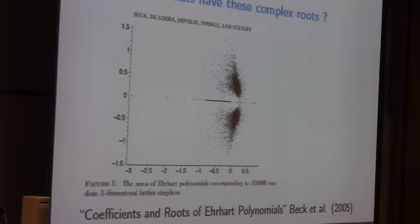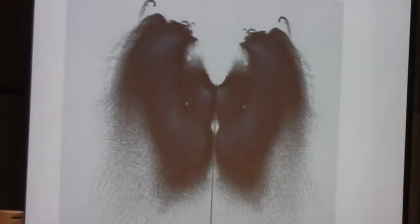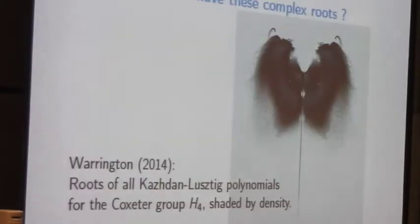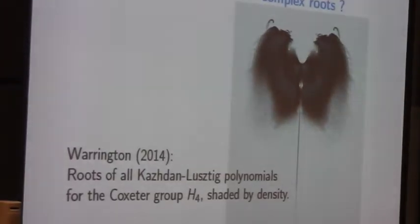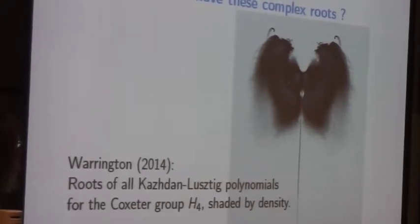And when I saw this one, it reminded me of another picture that I've seen similarly. So what polynomials have these complex roots? This came up as a piece of art in the joint meetings at the AMS recently. So this is done by Greg Warren. And these are all the roots of all the Kazhdan-Lusztig polynomials for the Coxeter group H4. And then the shading, the coloring there, is by density. Kind of similar, isn't it? It's a relatively similar sort of bat-like thing.